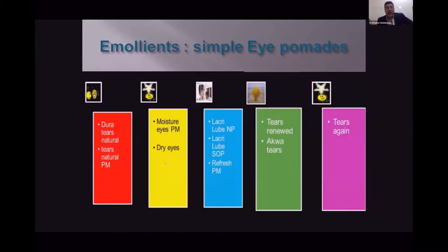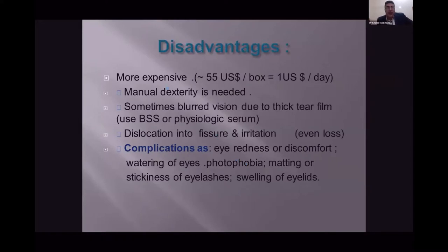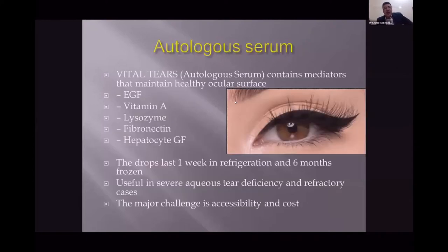For severe dry eye, a once-daily insert can be used; it is placed in the lower fornix and its effect begins after one hour and lasts 24 hours, though it is more expensive and can be dislocated. Artificial tear spray has less chance of contamination and is considered a good option, though cost is a barrier. Autologous serum contains mediators that maintain a healthy ocular surface such as VGF, vitamin A, lysozymes, and HGF. It is very useful in severe aqueous tear deficiency and refractory cases, though accessibility and cost are major challenges.